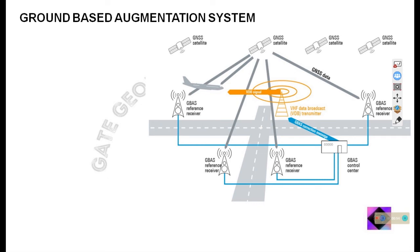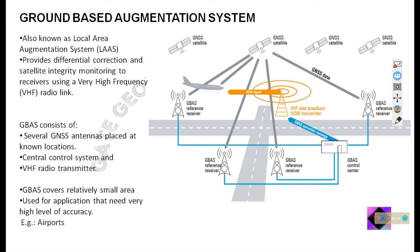G-BAS does not even cover a whole country, but it provides a high level of accuracy. In places where we need high accuracy but don't need wide coverage, we can use the G-BAS system or local area augmentation system. G-BAS is used by countries that don't have an S-BAS system, or in areas where the S-BAS system doesn't work.